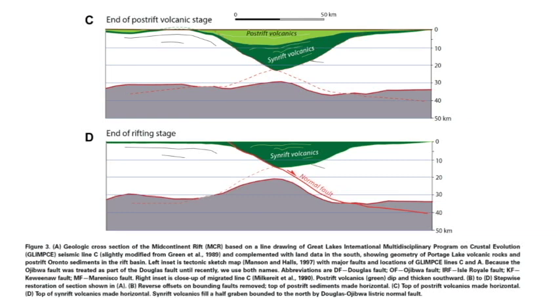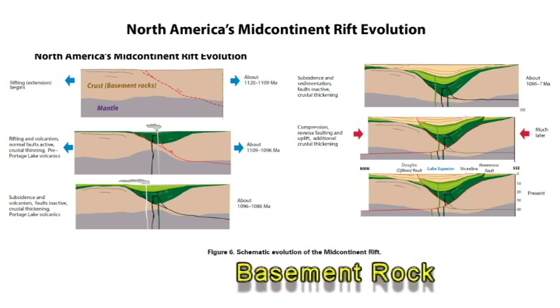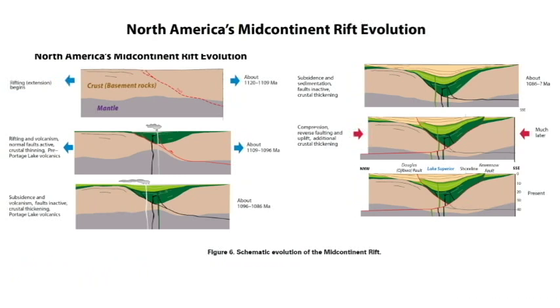And they call the pre-Portage Lake volcanics Sin Rift volcanics here. And they call the Portage Lake volcanics Post Rift volcanics in these two slides. But here is where they actually do a model similar to what I did. And they call it North America's Mid-Continental Rift Evolution. It's figure six in that short paper. And the reason, this is what I used as my base. But what they did differently from what I did is I included the pre-rift rocks where they just have crust basement rocks labeled here. I showed you that they were Archean and Paleo-Proterozoic or Archean and Paleo-Proterozoic in age.